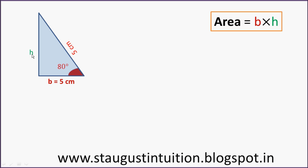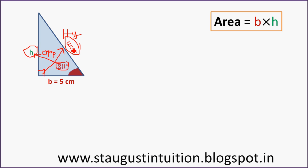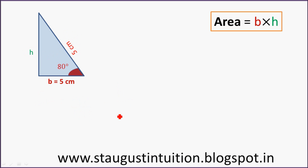We apply trigonometry ratios. This angle relates to the opposite side and the hypotenuse. So sin(80°) is equal to H divided by 5 — opposite side divided by hypotenuse. Okay.